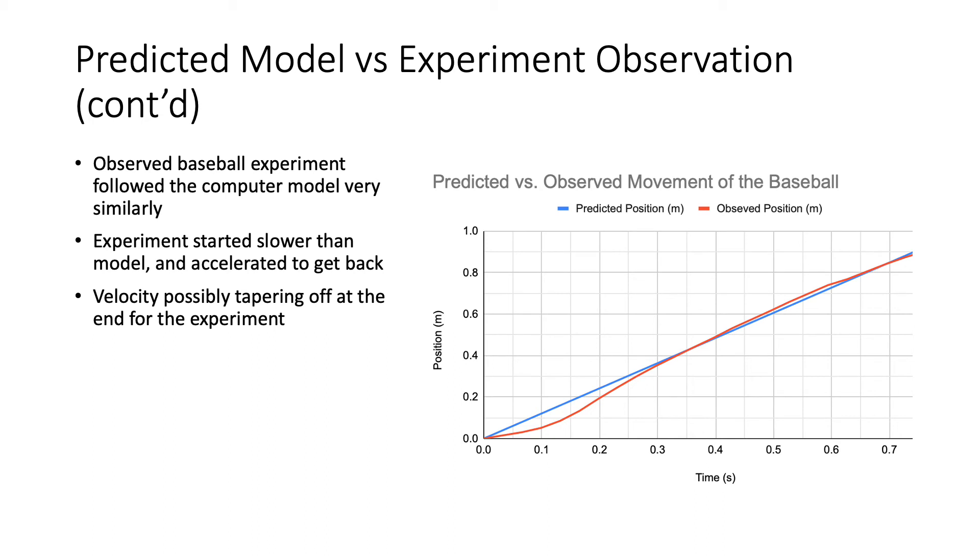The experimental movement of the baseball in Tracker started off at a much slower speed. However, when I gave it the push that we could see in the video, it appeared to accelerate and then get back on the same path as the computer program. We can also see towards the end that the velocity is possibly tapering off, and will eventually come to zero, but that's past the experiment.